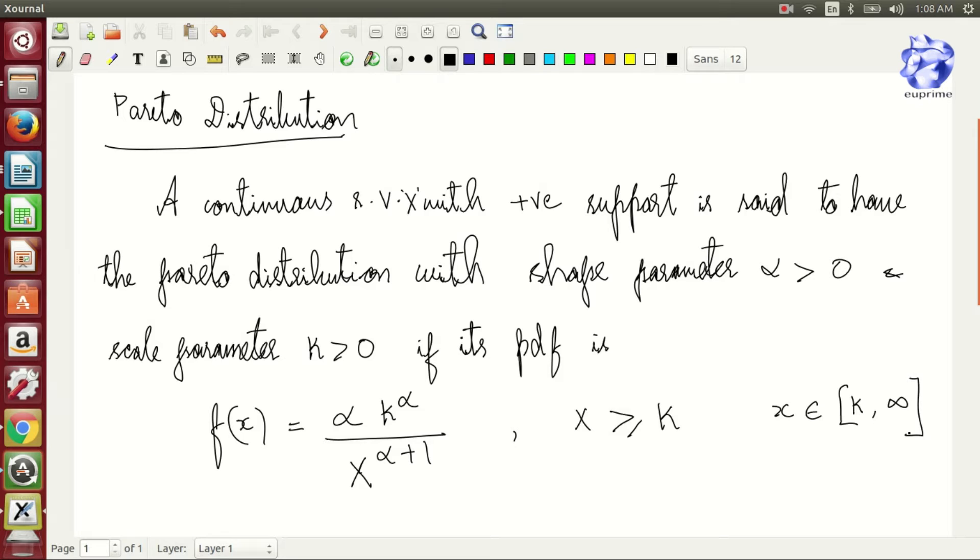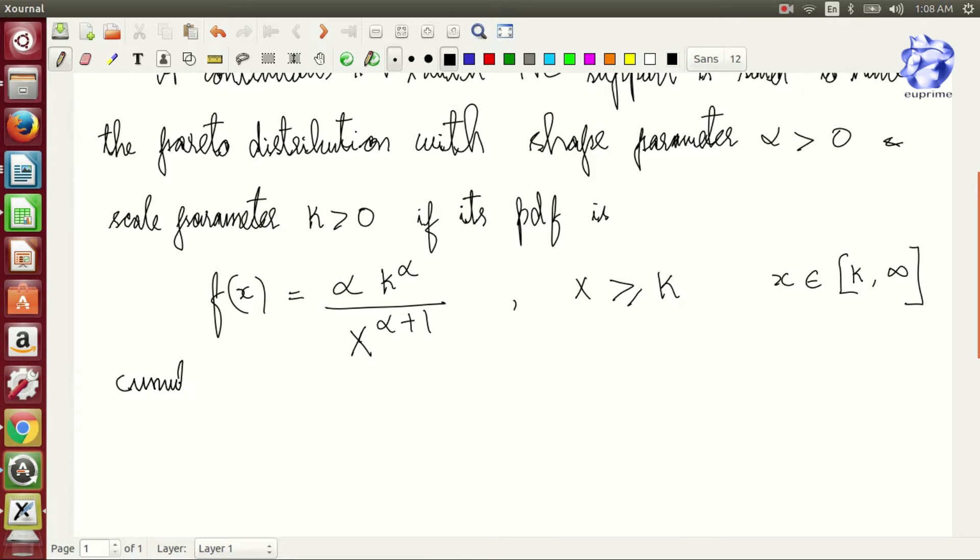capital K, x belongs to [K, infinity). The cumulative distribution F(x) is given as one minus (K/x) to the power alpha for all x greater than or equal to K.